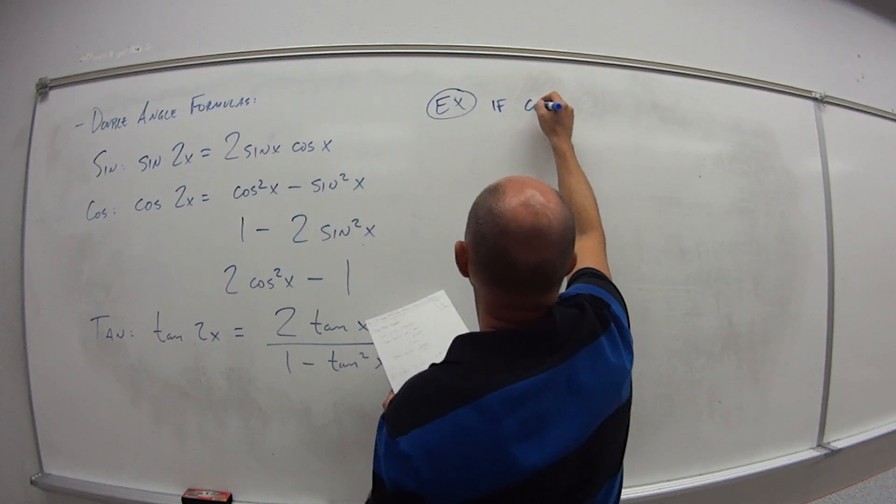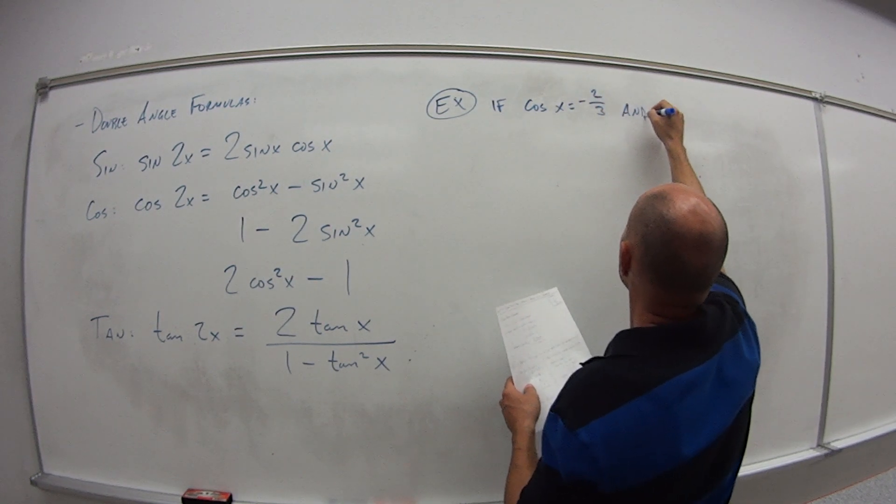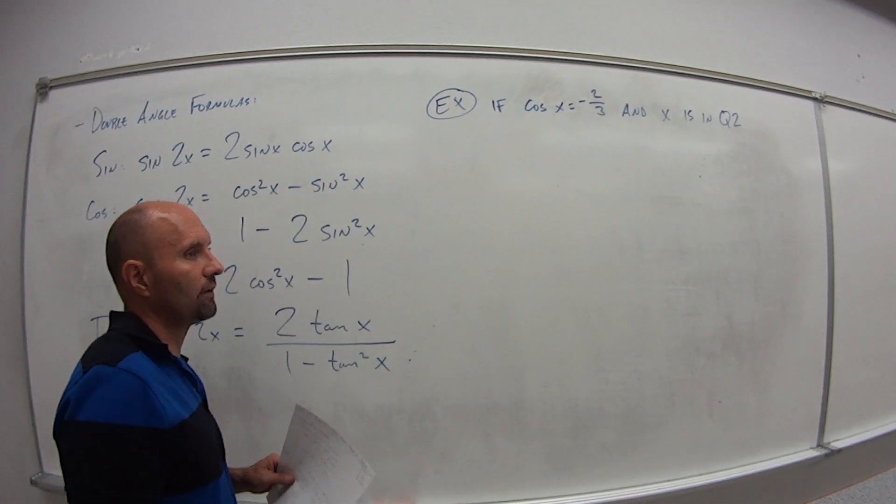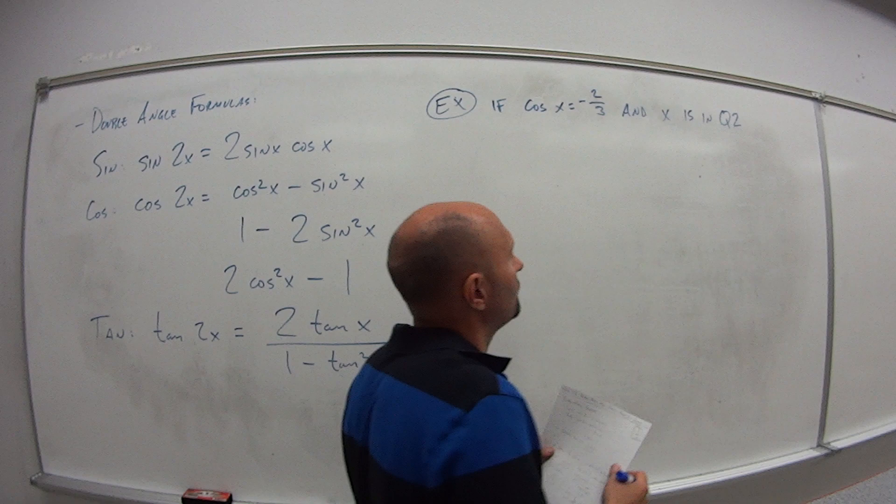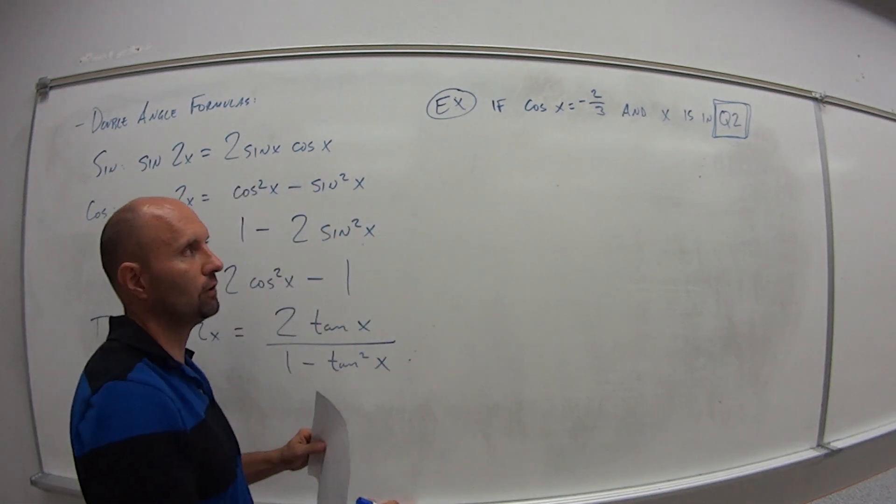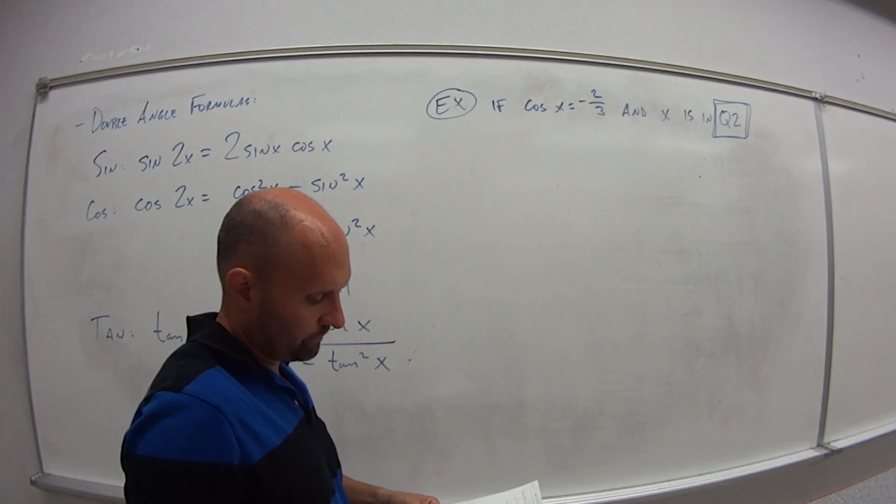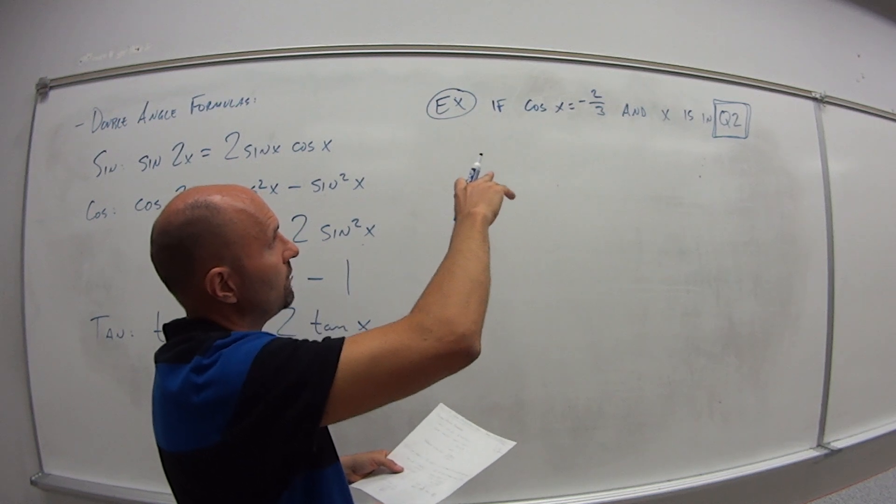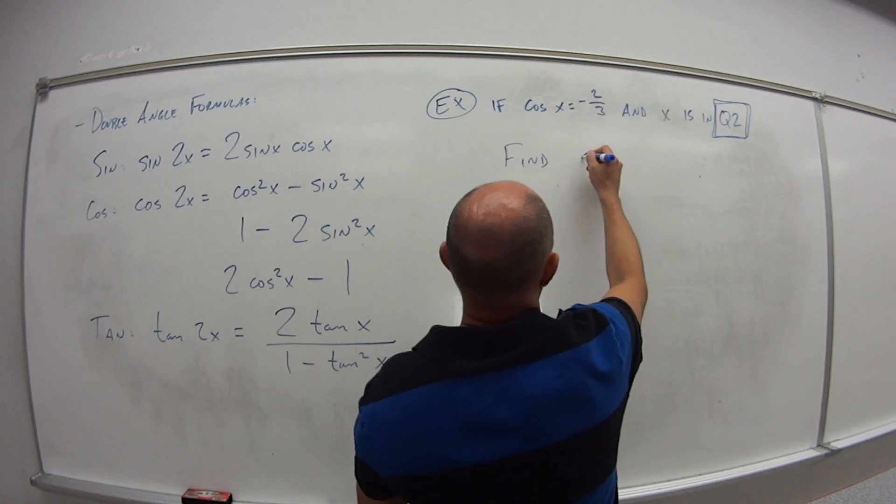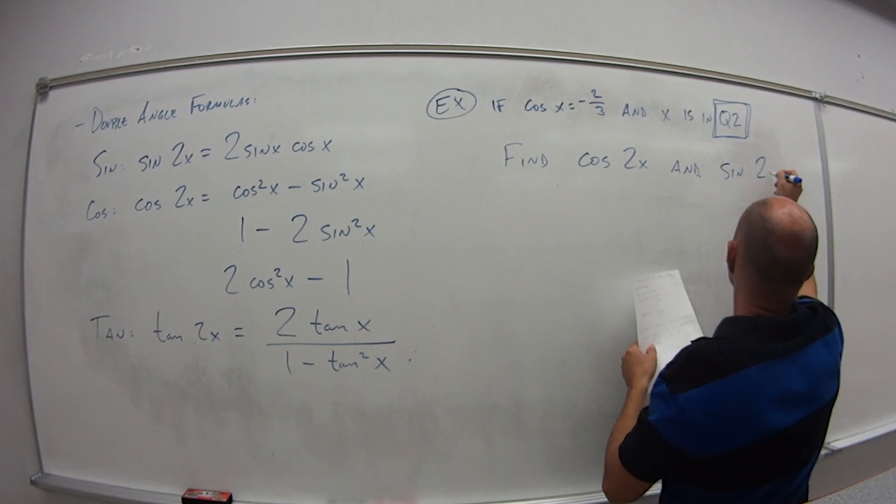Let's say if cosine of x is negative 2/3 and x is in quadrant 2. So remember what I said almost the first day of class. If you're given a problem and in the wording it's telling you that it's in some quadrant, first thing I would do is box that or circle it or highlight it so that you know your final answer has to actually lie in quadrant 2. So if cosine of x equals negative 2/3 and is in quadrant 2, we want to find cosine of 2x and sine of 2x.